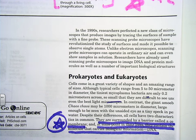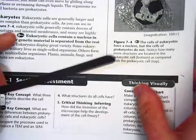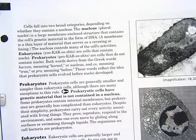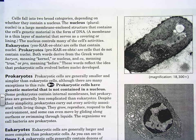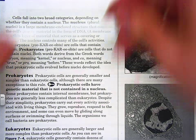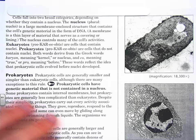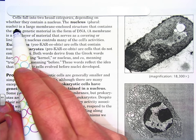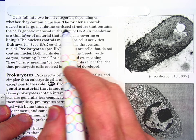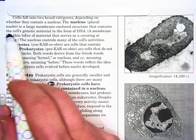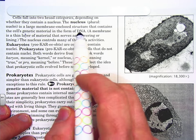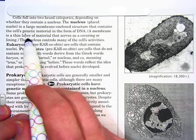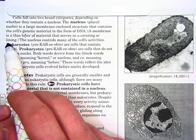Rock on to page 173. Cells fall into two broad categories depending on whether they contain a nucleus. The nucleus — plural: nuclei — is a large membrane-enclosed structure that contains a cell's genetic material in the form of DNA. A membrane is a thin layer of material that serves as a covering or lining.